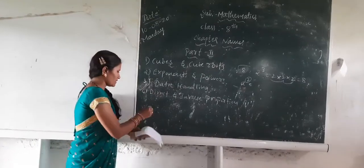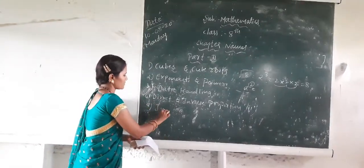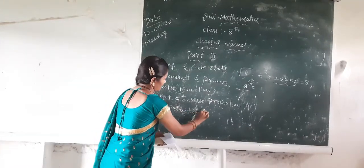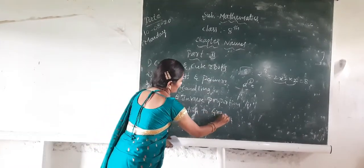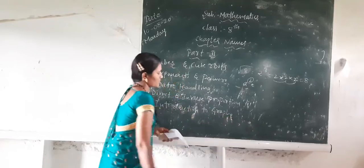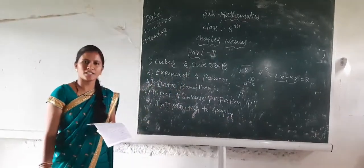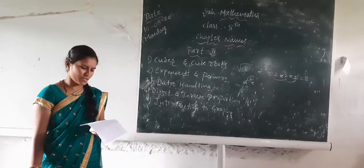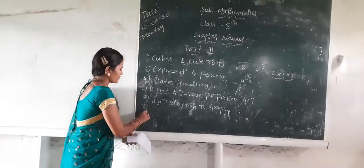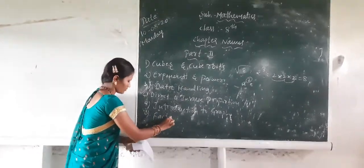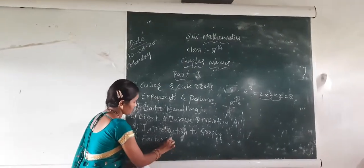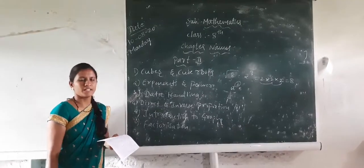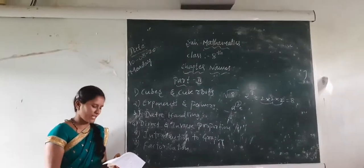The fifth chapter is Introduction to Graph — this is very, very important. Up to Class 7 you have learnt graphs, but here graphs are solved using a graph book. The sixth chapter is Factorization, which is also very important. Factorization methods are given and we have to calculate using those methods.